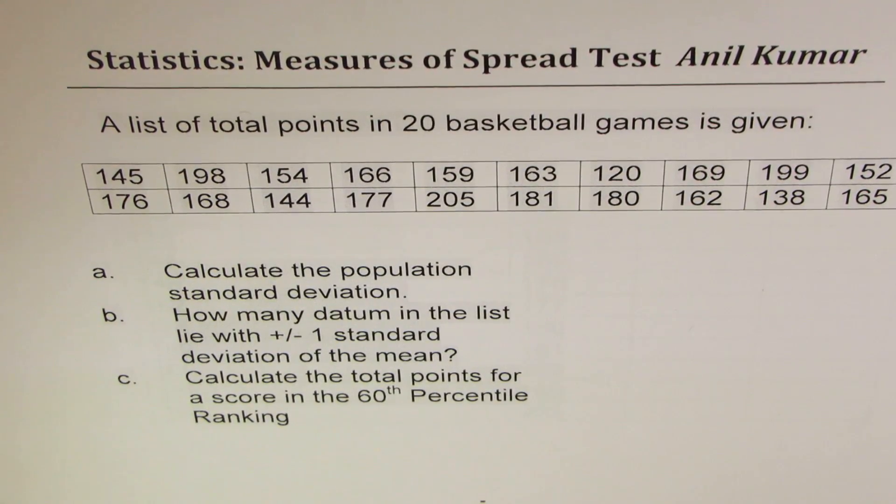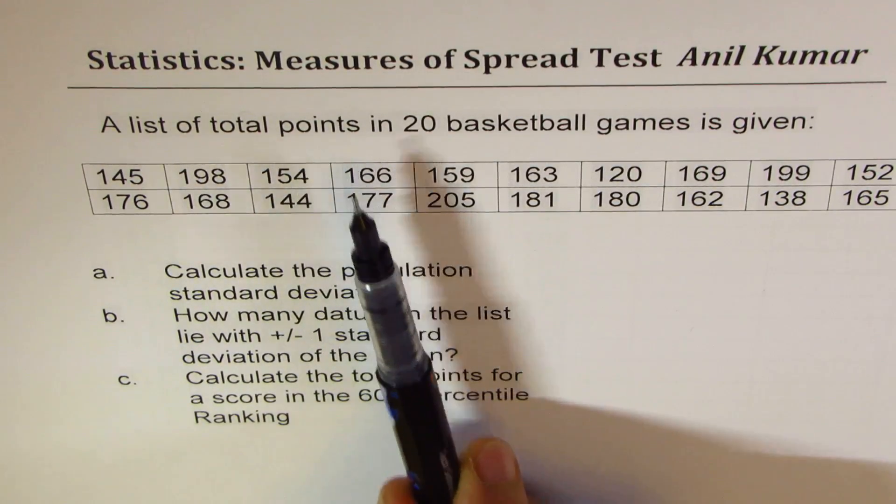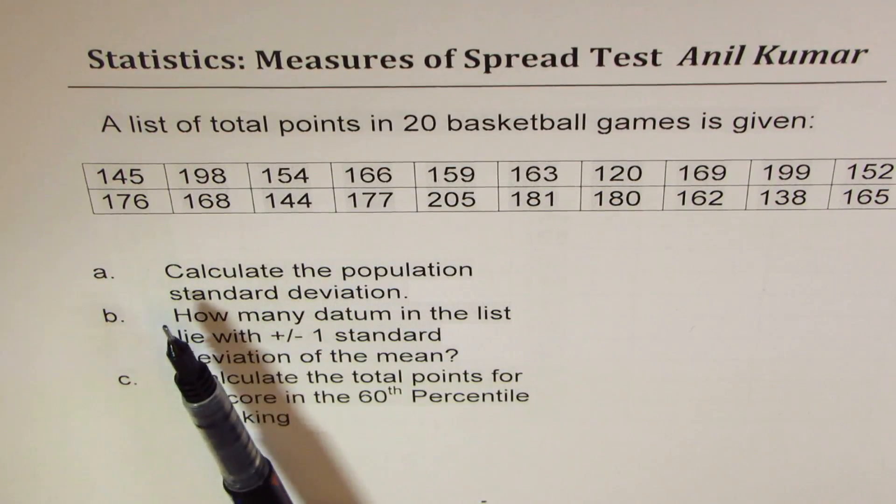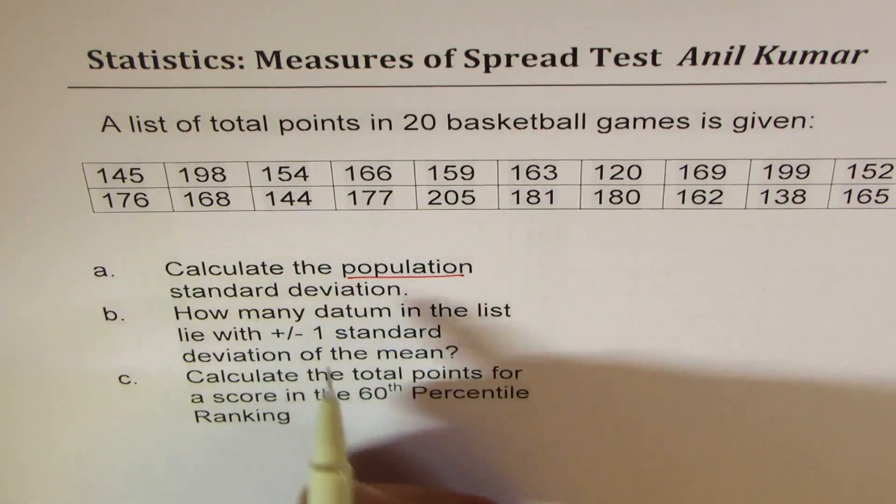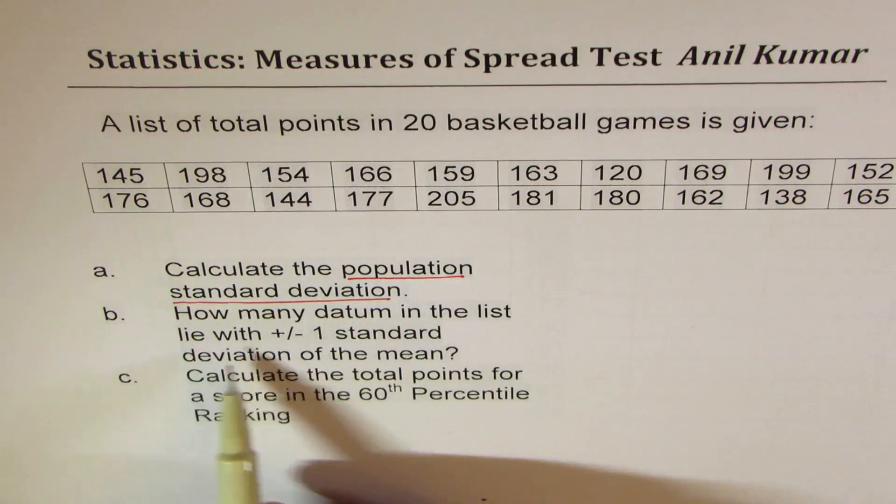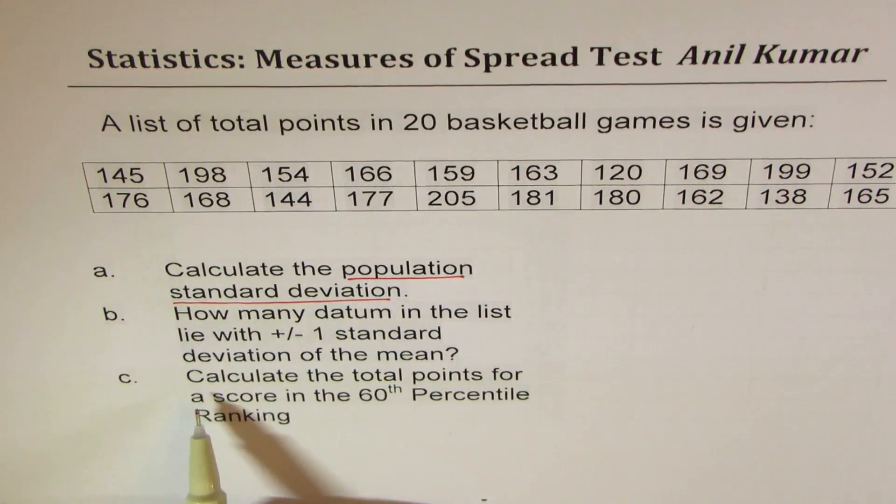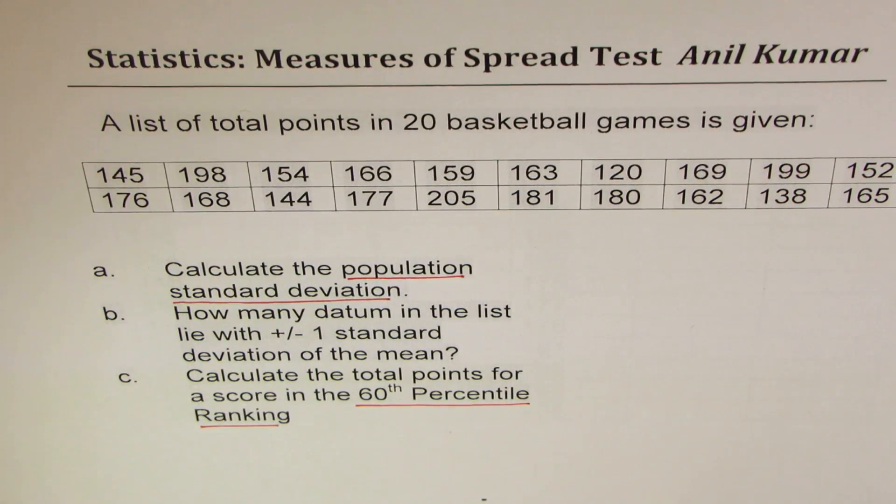I'm Anil Kumar sharing with you solution of a test question on measures of spread. The question here is, a list of total points in 20 basketball games is given. So that is the data available to you. You need to calculate the population standard deviation. How many data in the list lie within plus and minus one standard deviation of the mean? And part C is, calculate the total points for a score of 60th percentile ranking.